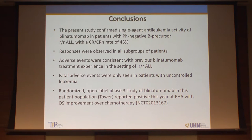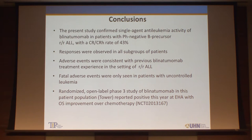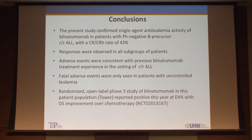Conclusions from this trial confirm very good single-agent anti-leukemic activity for blinatumumab in relapsed/refractory ALL, with responses seen across all relevant subgroups. Fatal AEs were only seen in patients where disease could not be controlled. The TOWER study — the randomized confirmatory phase III trial of this agent — was reported as positive at the European Hematology meeting, showing an overall survival advantage. We are seeing practice-changing data in ALL with this agent.